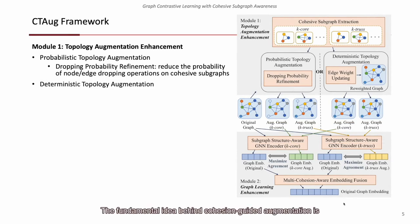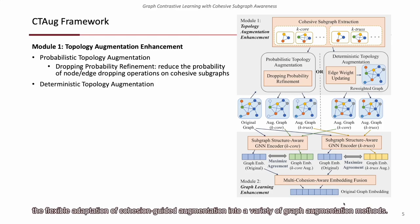The fundamental idea behind cohesion-guided augmentation is to preserve the cohesive subgraphs in the augmented graphs. We designed CT-ORG, a unified topology augmentation framework that enables the flexible adaptation of cohesion-guided augmentation into a variety of graph augmentation methods.